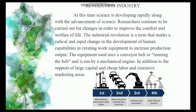Industrial Revolution: At this time, science developed rapidly. Researchers continued to carry out changes in order to improve the comfort and quality of life. The Industrial Revolution is a term that marks a radical and record change in the development of human capabilities, including increasing work equipment to boost production output. Equipment such as conveyor belts was run by mechanical engines, supported by large capital, cheap labor, and extensive market areas.